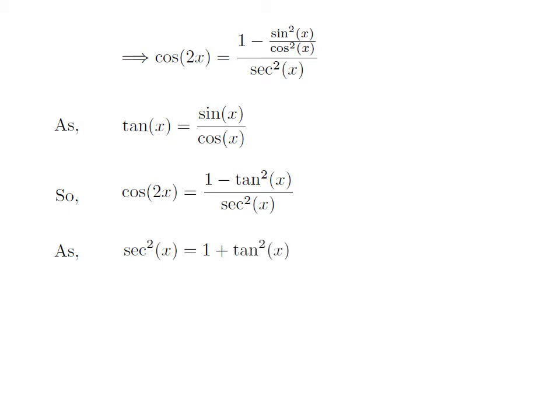As the square of secant of x is equal to 1 plus square of tangent of x — the proof of this identity has been explained in the video appearing in the upper right corner and the URL is in the description — after applying this identity we get the final result: cosine of 2x is equal to 1 minus square of tangent of x, divided by 1 plus square of tangent of x.